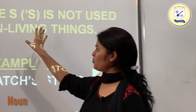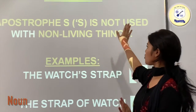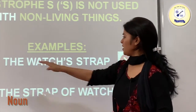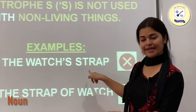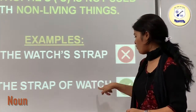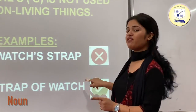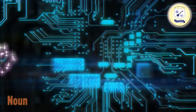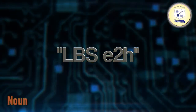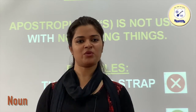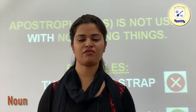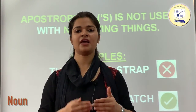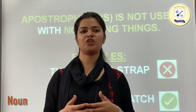Apostrophe is not used with non-living things. For example, the watch's strap is incorrect. The correct form is the strap of the watch. We do not put apostrophe s after a non-living thing like watch. So now we are done with our topic on nouns. We have discussed the types of nouns with many examples. Please go through this video again and refer to your books to make this topic clear.